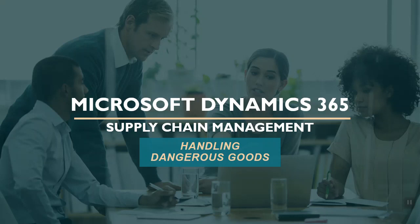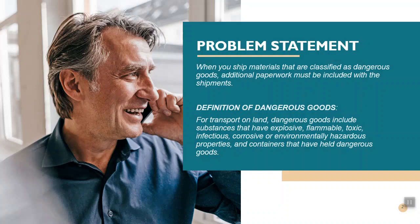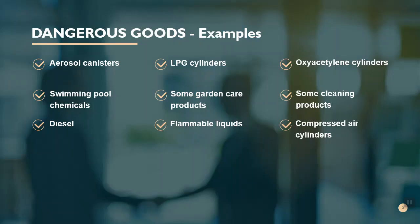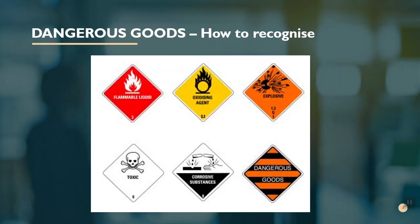Today we will learn how to set up dangerous goods in Microsoft Dynamics 365 Supply Chain Management or Finance and Operations. Whenever we are shipping dangerous goods from a manufacturing company, we must provide additional paperwork along with the shipments. The definition of dangerous goods includes anything which is explosive, flammable, toxic, corrosive, or hazardous. Examples include LPG cylinders, flammable liquids, and compressed air cylinders.